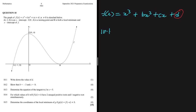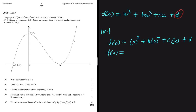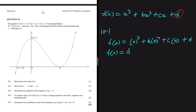If we evaluate f(0), we get 0³ + b(0²) + c(0) + d, which simplifies to just d. So f(0) = d. We know that f(0) gives us the y-intercept, so d is the y-value of the y-intercept.